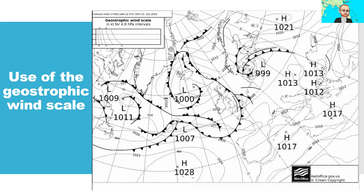Weather charts, also known as surface pressure or synoptic charts, contain a lot of information that helps weather forecasters make predictions about the weather and sea conditions. We have here the isobars — the lines of the same pressure — which help us get the geostrophic wind and ultimately the real wind.